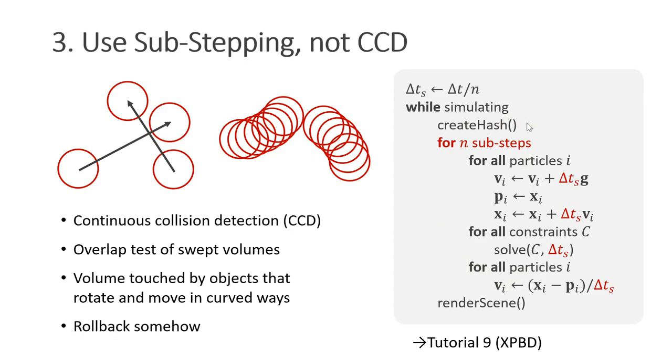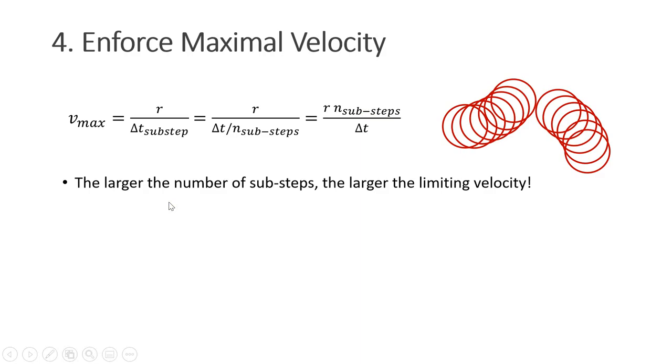However, even with substepping, we might miss collisions. To avoid this problem, we enforce a maximal velocity. We want that the particles do not move further than r during a substep. The size of a substep is the size of a simulation step divided by the number of substeps. So what you can see is the maximal velocity is proportional to the number of substeps. This means the larger the number of substeps, the larger the limiting velocity.